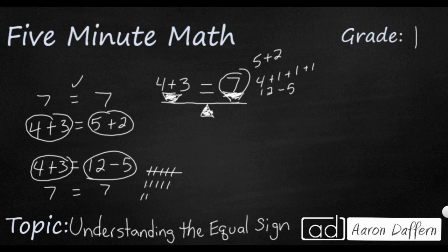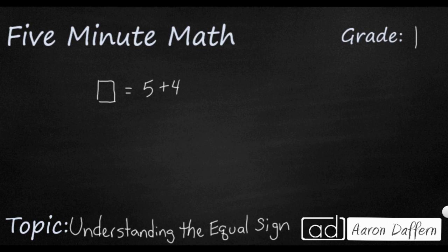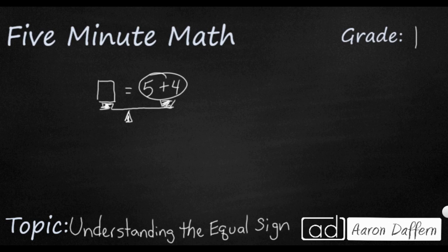Let's look at a few more examples. Sometimes you might see something like this — you might see an unknown at the beginning of a number sentence. So you might see something like a box or unknown equals 5 plus 4. That's a little strange because typically we would see it flipped around: 5 plus 4 equals whatever the unknown is. But if we think about it as a balance, all we need to do is make both sides equal. So what does 5 plus 4 make? Well, 5 plus 4 makes 9, so we could say 9 equals 5 plus 4. That balances out because 5 plus 4 makes 9 — we're really looking at 9 equals 9.